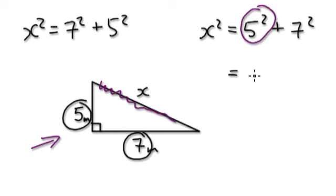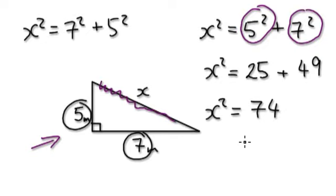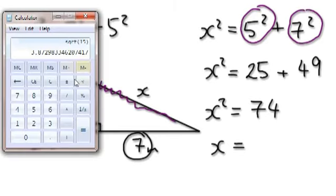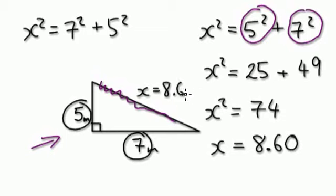So 5 squared becomes 25, and 7 squared becomes 49. x squared stays the same. Now add the two together — you're trying to work out x, so this would be 74. So x squared equals 74. Now square root both sides. Jump to a calculator: square root of 74 equals 8.60. So x equals 8.60. Because we're working in meters, the answer would be 8.60 meters.